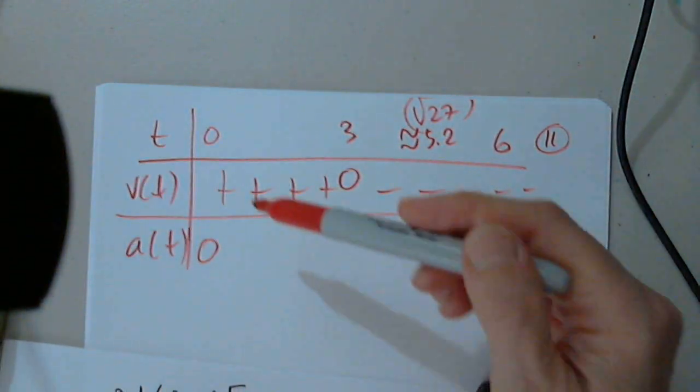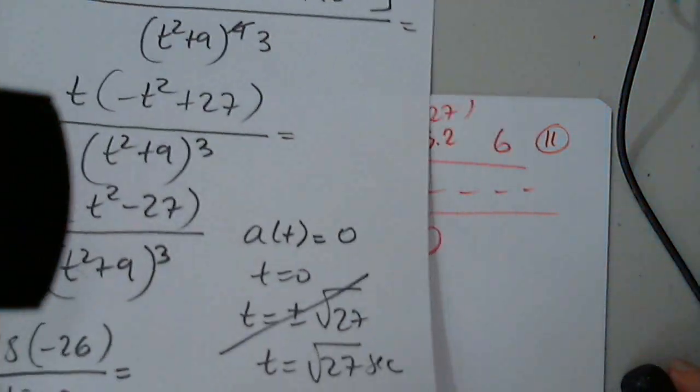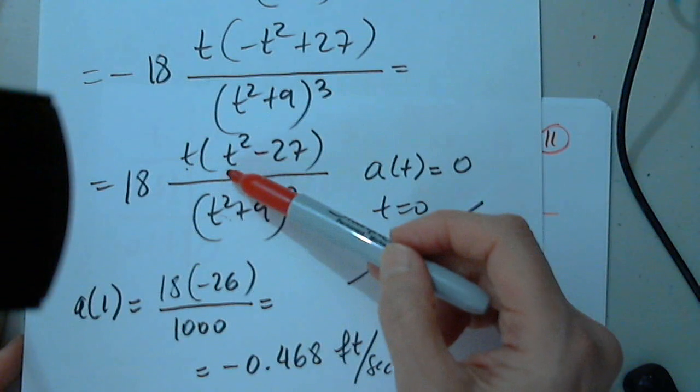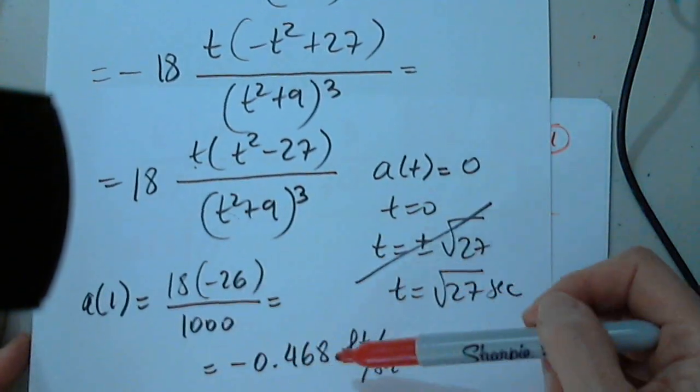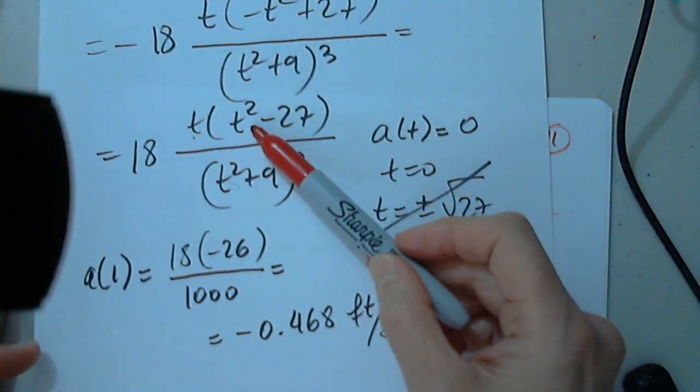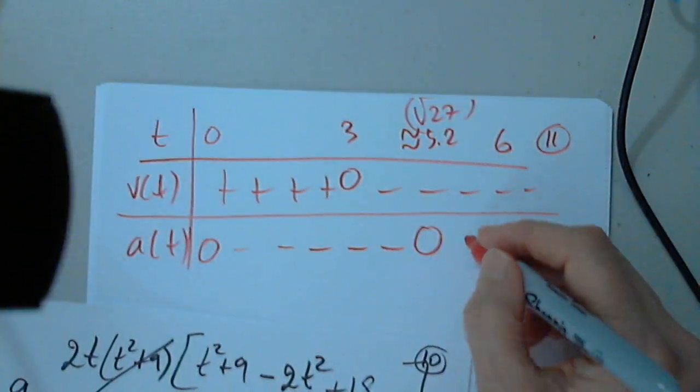So when I plug in 1 or 3, when I plug in 1, this will be negative. 1, 1 minus, I already have the answer. When I plug in 1 is negative. And now when I plug in 6, this will always be positive.